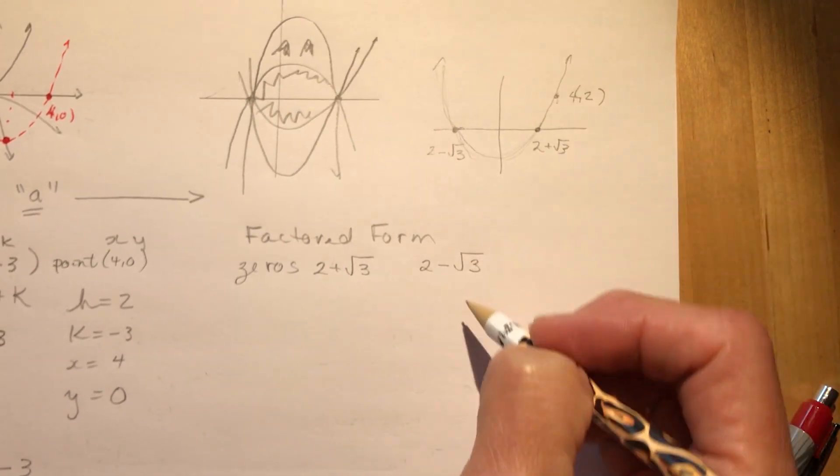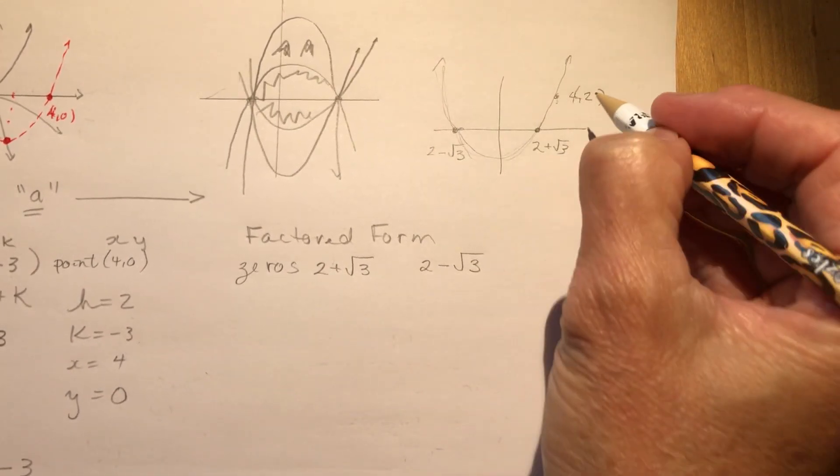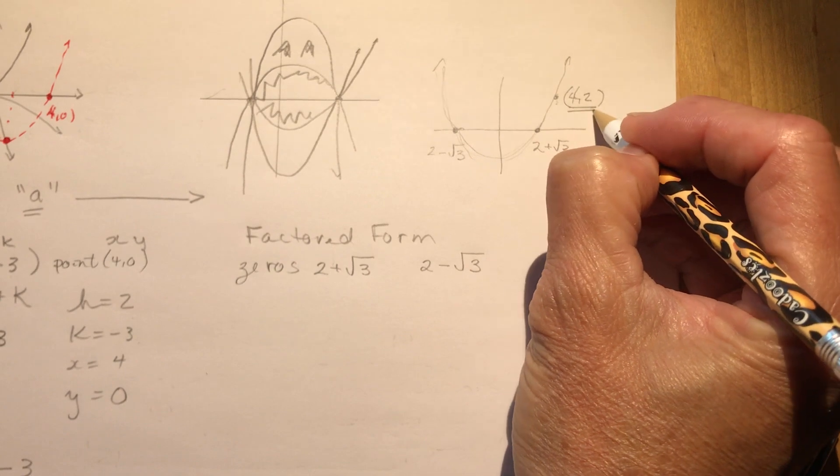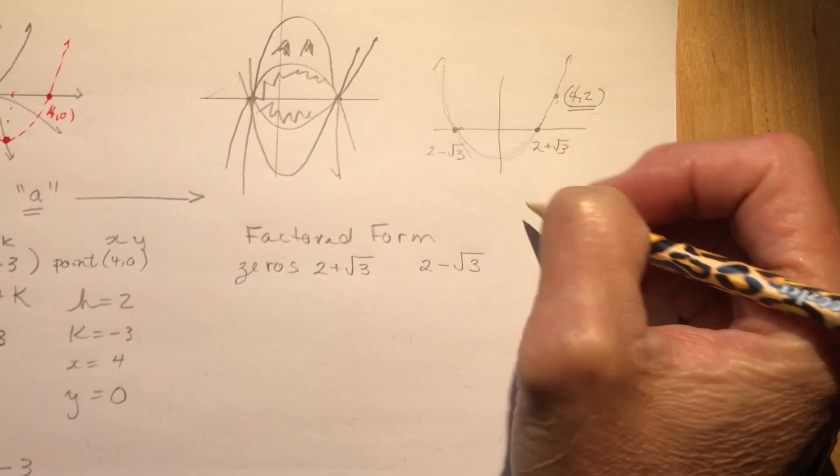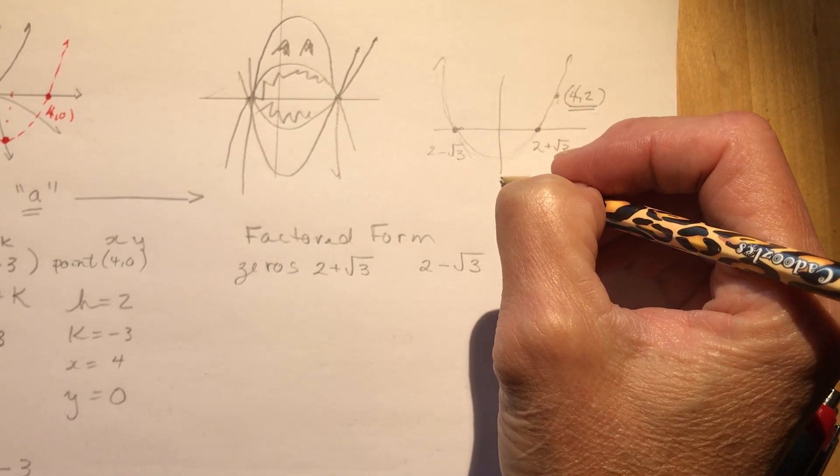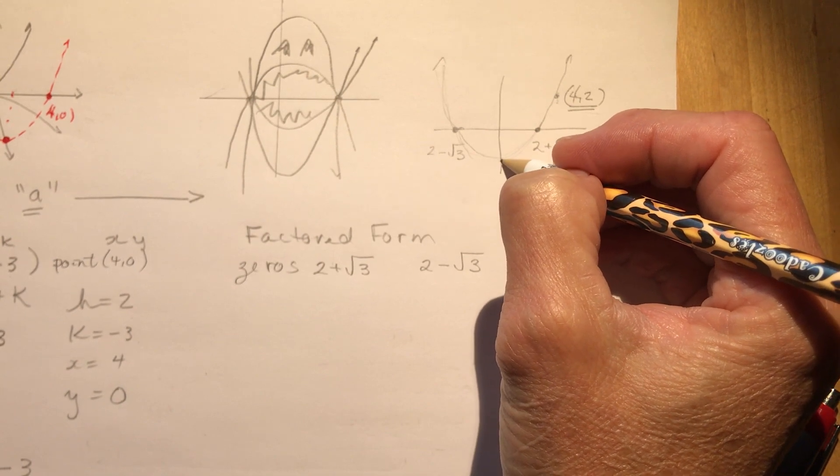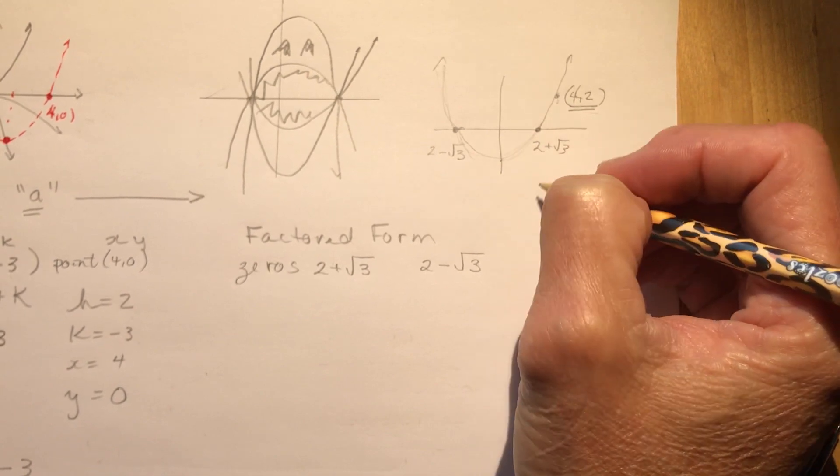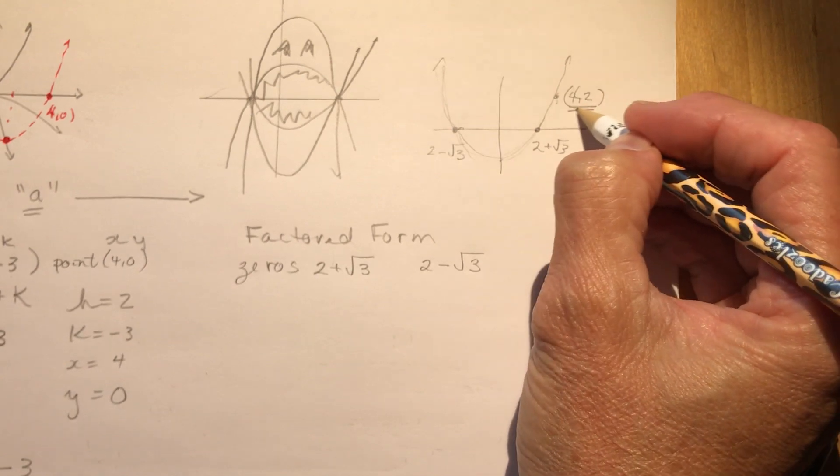So your job is to find the a value. So you have to be given a point, you have to know a point. Or you have to know the y-intercept. So if I said the y-intercept was minus one, then you'd say zero minus one. But I didn't give you that. We're going to use this point right here.